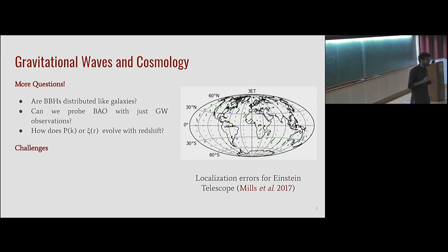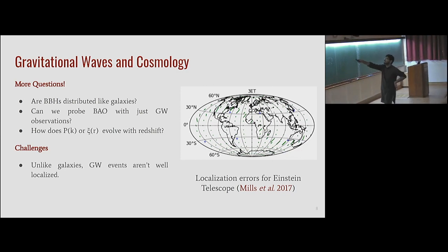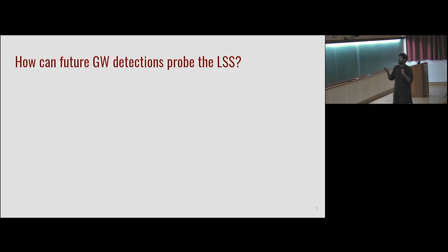But there's one very big challenge here in the fact that, unlike galaxies, gravitational wave events are not well localized in three-dimensional space. As you can see here, each of these streaks is actually the localization region of a binary black hole in the sky, even with future detectors. What that means is you can't measure distances accurately between black holes, and because you can't measure distances accurately between black holes, you can't measure the correlation function to that accuracy which you can measure with galaxies.